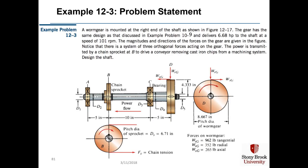Let's take a look at example problem 12-3. In this problem, a worm gear is mounted at the right side of the shaft. The gear delivers 6.68 horsepower to the shaft at a speed of 101 rpm. This example was previously used as problem 10-9 in the study of worm gears in chapter 10, so we've already calculated the forces on the worm gear. The torque flows from the gear — driven by a worm not shown — through bearing C and out the chain sprocket, so bearing A sees no torque or moment.